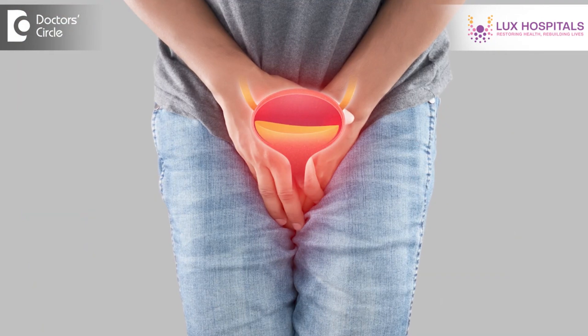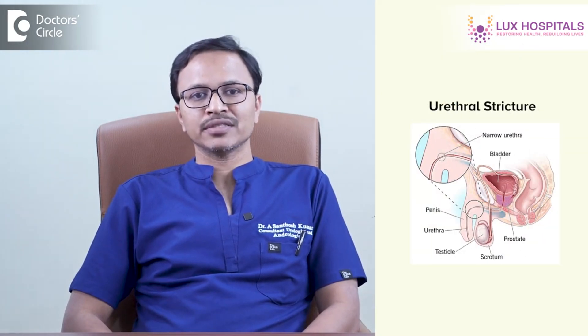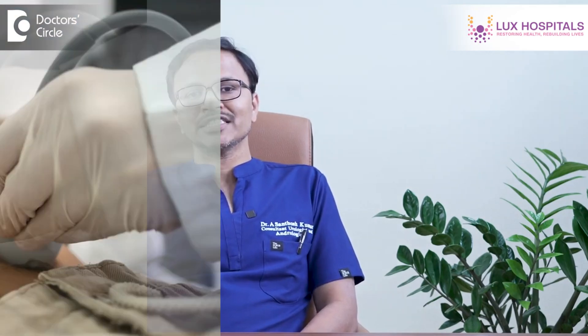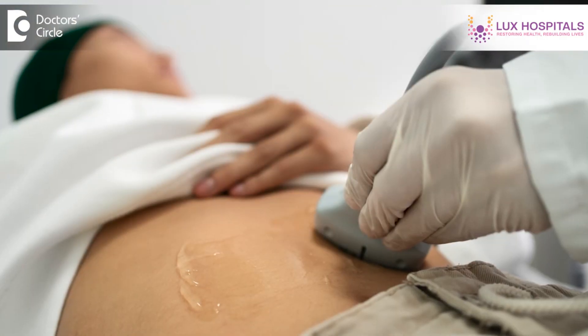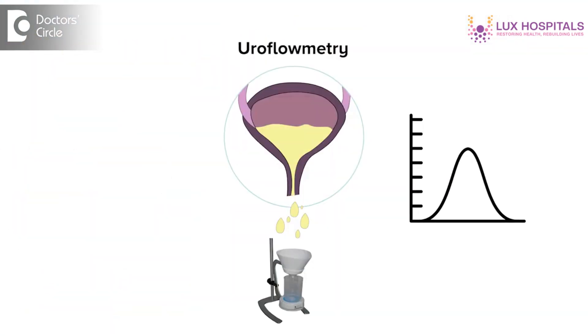Usually whenever a patient presents with lower urinary tract symptoms, whether young or adult, there are chances he may have urethral stricture. We diagnose urethral stricture based on clinical symptoms — how he is presenting and the duration of symptoms. We also advise investigations like ultrasonography to look for post-void residual urine or any stones in the bladder, kidney, or ureter. We usually do uroflowmetry, which indicates the flow of urine and how significantly voiding is affected.